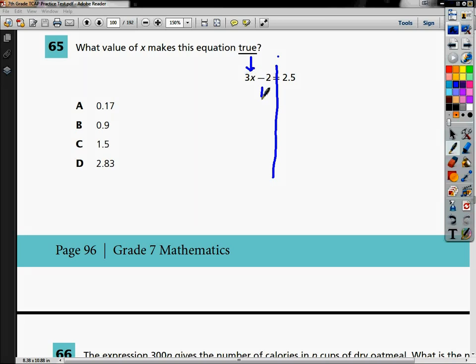In order to get rid of minus 2, I'm going to add 2. So these cancel. Bring down your 3x. 2.5 plus 2 gives you 4.5.